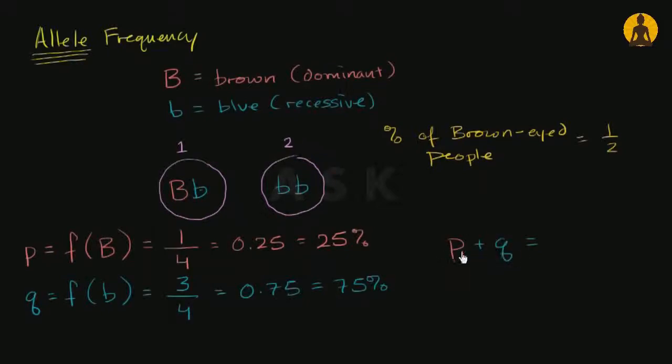well, everyone's going to have one of those two, so if you add those two frequencies, it's going to have to add to 100%, and we see that there. One-fourth plus three-fourths is one, or 100%, and 25% plus 75% is also 100%. So we could say p plus q is equal to 100%, or we could say that p plus q is equal to one, is equal to one.